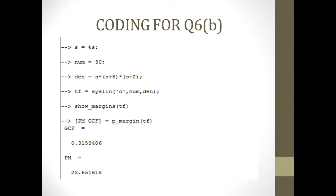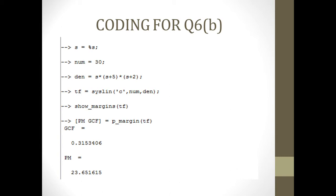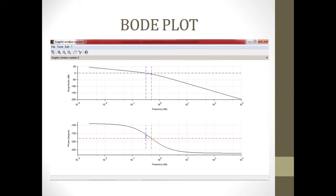As we can see in the coding, S is declared. Numerator equals 30. Denominator equals S times S plus 5 times S plus 2. Transfer function equals to system Syslin, C, numerator and denominator. Then, it shows the transfer function margin which is this Bode plot. According to the Bode plot, it shows the magnitude and phase graph.